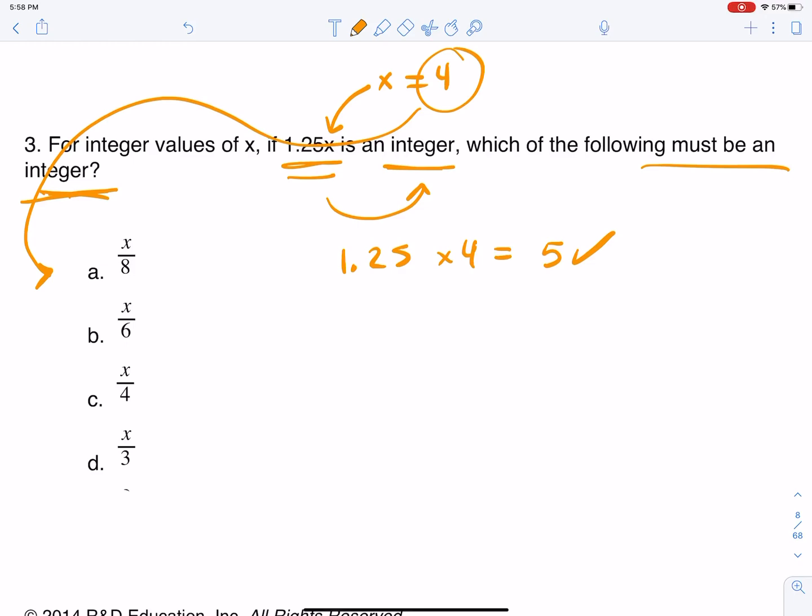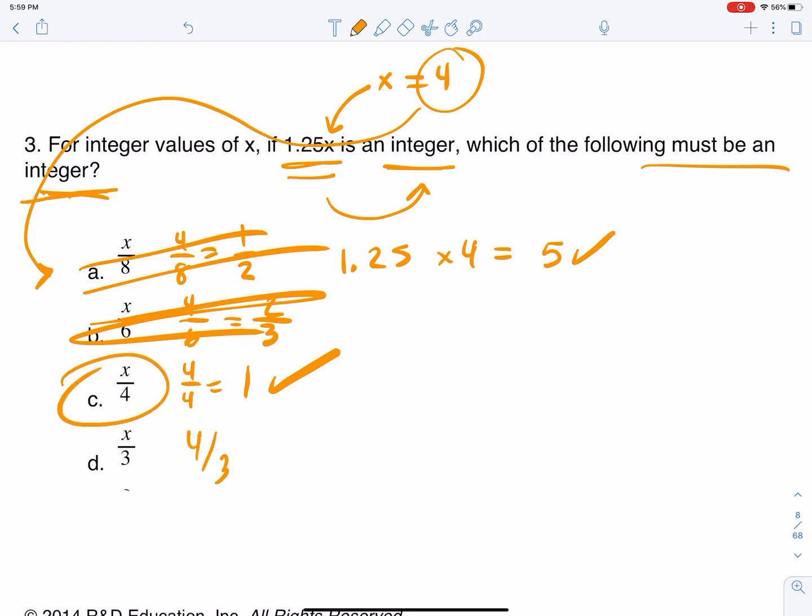Well, answer choice A is four over eight, which would be one half. That's not an integer. But what if you had chosen a gigantic number for x? Then all of these would be integers and you just have to keep choosing new numbers. That's why using a small number works really well. And you always have to test all the answer choices in case more than one works. Because if more than one works, then you gotta try another number. So four over six would be two thirds. So that doesn't work. Four over four, that's one. That does work. But remember, we wanna try all of them. Four over three does not work because that would be one and one third. So that's it. It's gotta be answer choice C.